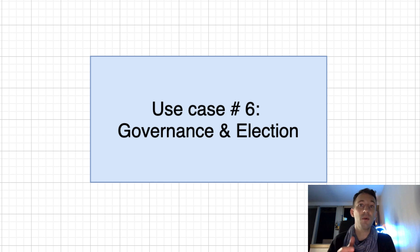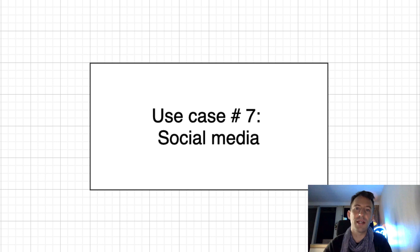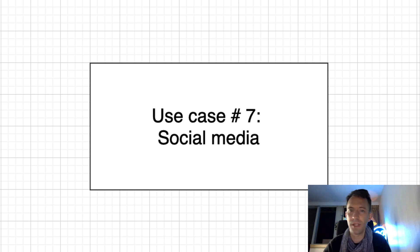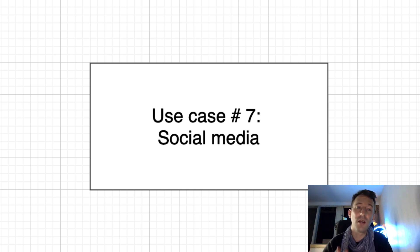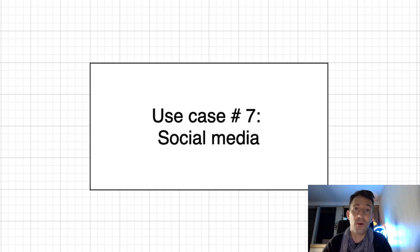And maybe one day we will even vote for presidential elections on the blockchain. Another use case is for social media. Currently there is a huge concentration of power among social media companies, and they have started to take an increasingly aggressive attitude toward censorship — done by social media companies today, but potentially by governments tomorrow. With blockchain, we could have decentralized social media networks where nobody could censor anything.